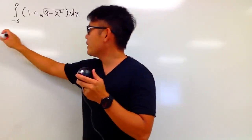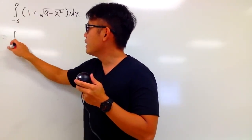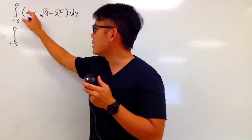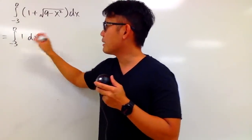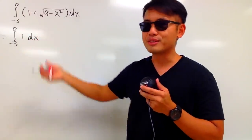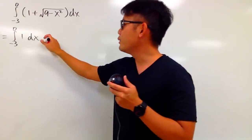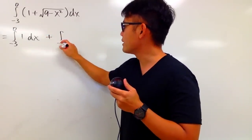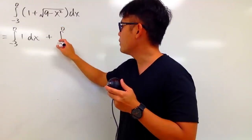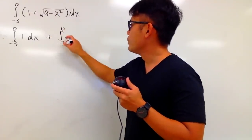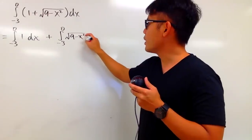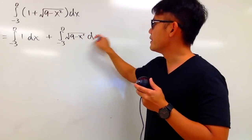This is the same as integrating from negative 3 to 0 of 1 dx — that's the first integral — and then you add it with the next one, which also goes from negative 3 to 0, and you are looking at square root of 9 minus x squared dx.